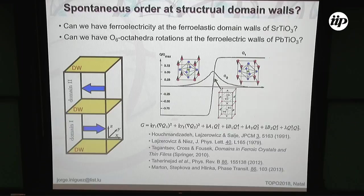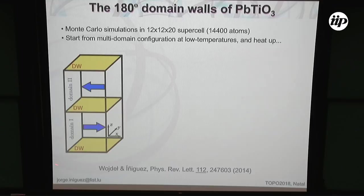That's what we thought when we started this study. What we did was consider a supercell — a simulation supercell formed by 12×12×20 unit cells of lead titanate. We started with a multi-domain configuration and heated up the system to explore the situation as a function of temperature and see what we found.